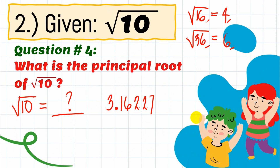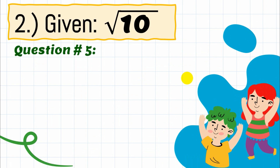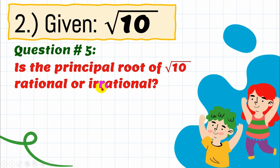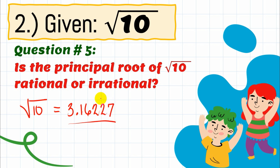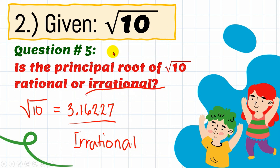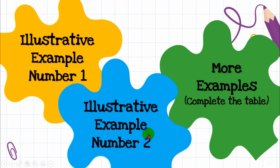Now let's answer question number five: is the principal root of the square root of 10 rational or irrational? We found that the square root of 10 equals 3.16227... — a decimal number. Whenever the result is a decimal number, it is automatically an irrational number. So the principal root is irrational. That's example number two — I hope you understood the difference: in illustrative example one the radicand was a perfect square, here it is not.